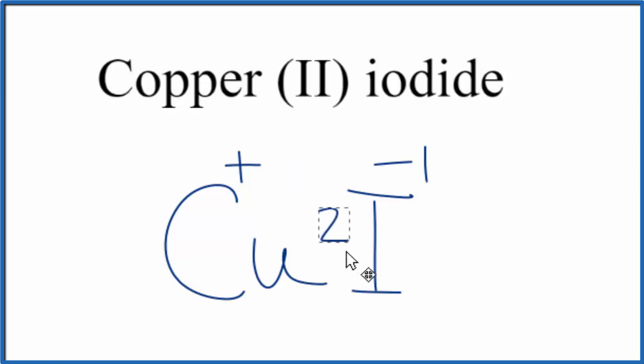We could put a 2, crisscross it. We're gonna put the 2 here and then the 1 down here. We don't need to write the 1 by convention, so this is the formula for copper(II) iodide: CuI2.